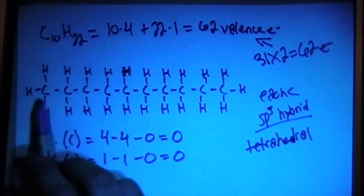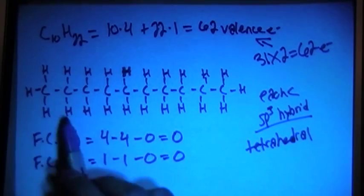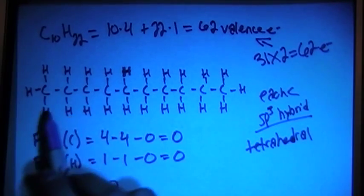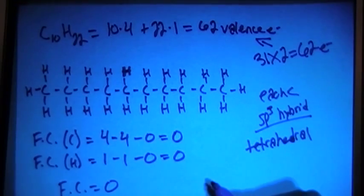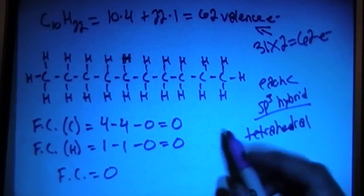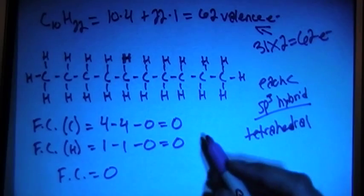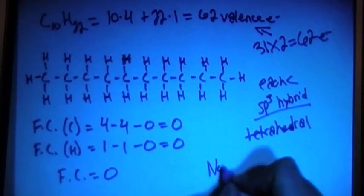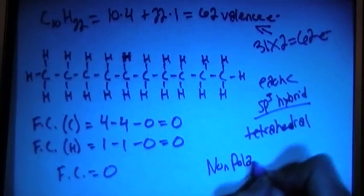And because this is a symmetric atom, each H has an opposite H pointing in the opposite direction, there's going to be a net dipole moment of 0, which means that this C10H22, this decane, is going to end up being a non-polar molecule because all of the carbons and all of the hydrogens cancel each other out, giving you a zero net dipole moment being non-polar.